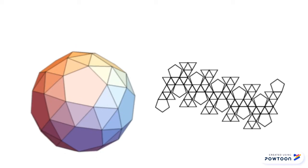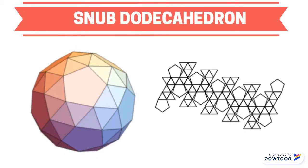The name of the shape discussed in this video is the snub dodecahedron. The snub dodecahedron contains 12 regular pentagonal faces and 80 equilateral triangle faces, for a total of 92 faces in one shape.